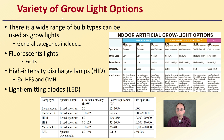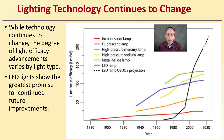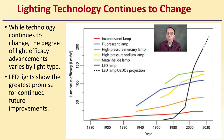This is a nice comparison looking at spectrum, cost, power draw, efficiency, and applications. Before getting to specifics, it's important to note that lighting technology continues to change. The degree of light efficacy advancements varies by light type — LED lights show the greatest promise for continued future improvements. We see leveling off in incandescent, fluorescent, and metal halide lights, but LED lights are going against that trend with what looks like an exponential rise projected going forward.